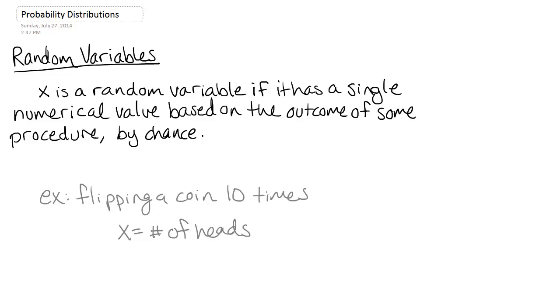This is typically written with either a capital or lowercase letter X. X is a random variable if it has a single numerical value based on the outcome of some procedure that's by chance. So it's a variable in that it has different possible outcomes or it has different possible values.